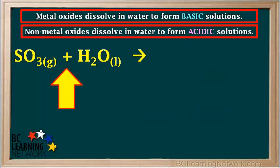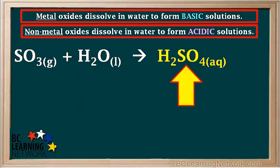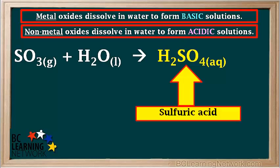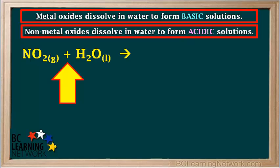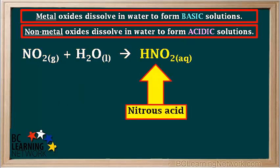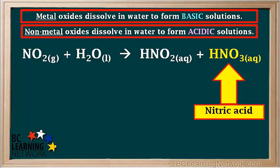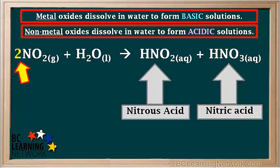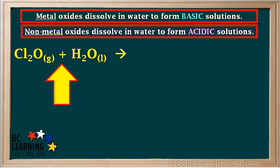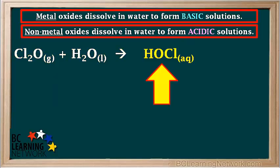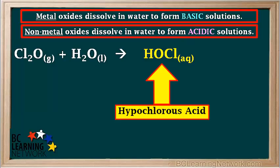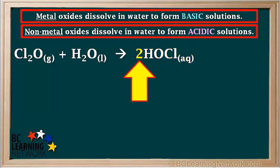Another oxide of the nonmetal sulfur, called sulfur trioxide, SO₃, reacts with water to produce H₂SO₄, or sulfuric acid, which is a strong acid. The nonmetal oxide nitrogen dioxide, NO₂, reacts with water to produce HNO₂, called nitrous acid, and HNO₃, called nitric acid — a coefficient of 2 is added to balance the equation. The nonmetal oxide Cl₂O, or dichlorine monoxide, reacts with water to produce HOCl, called hypochlorous acid; the coefficient 2 is added to balance the equation.